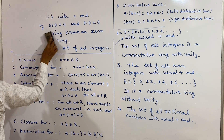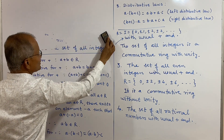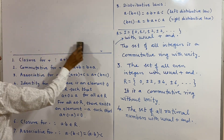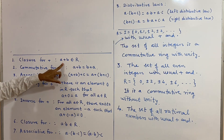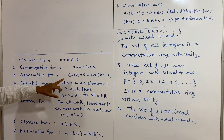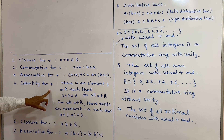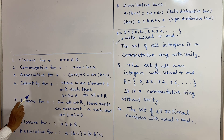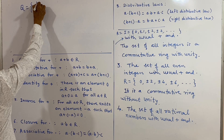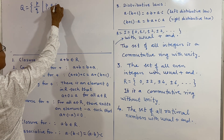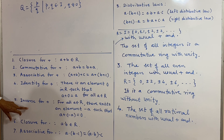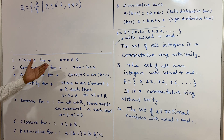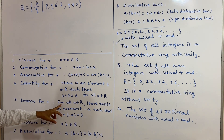We can easily check the ring axioms for rational numbers. Closure holds because addition of two rational numbers is again a rational number. Addition is commutative and associative. The identity element is 0, which is a rational number. We usually denote rational numbers by Q, numbers of the form p upon q where p and q are integers and q is not equal to 0. The additive inverse exists because if A is rational, negative A is also rational.